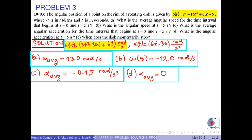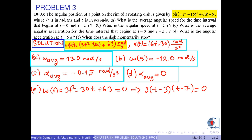Finally, in part e, we use the angular speed formula, which is 3t² minus 30t plus 63 radians per second. Since the disk momentarily stops, omega(t) equals 0. Rearranging this formula for t, we obtain 3(t minus 3)(t minus 7) equals 0. From this equality, we obtain t₁ equals 3 seconds and t₂ equals 7 seconds.